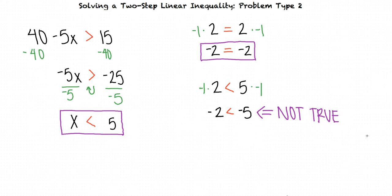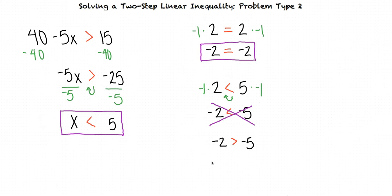To make this statement true, we must flip the inequality sign. Now the statement reads, negative 2 is greater than negative 5. And now the statement is true.